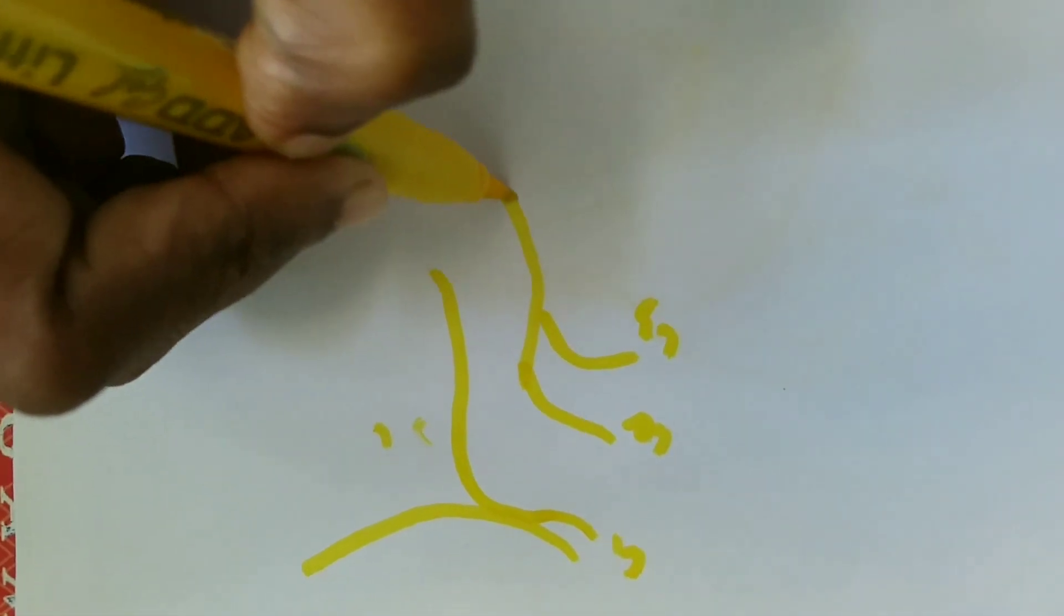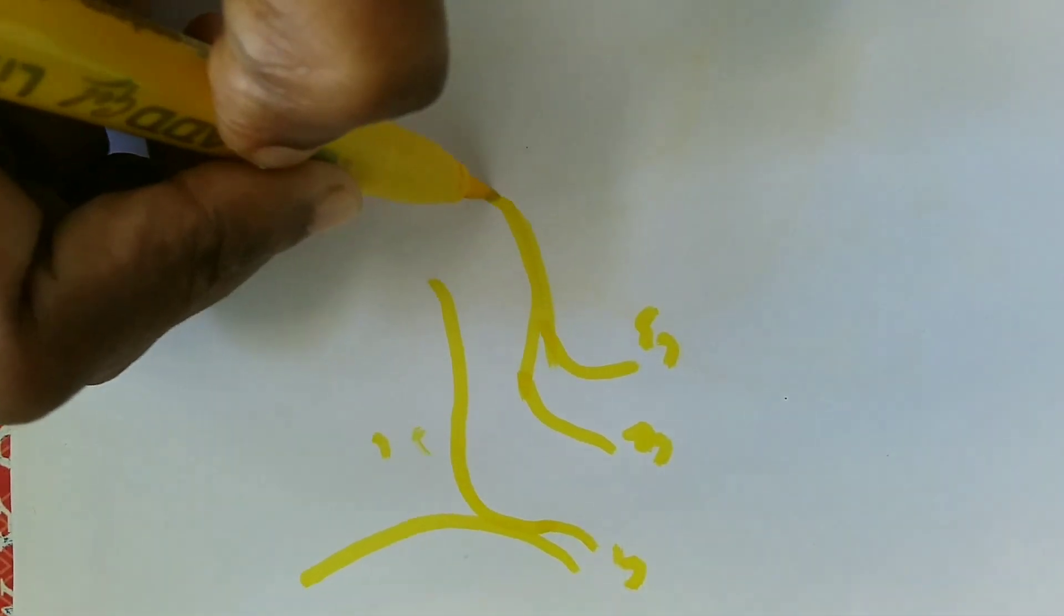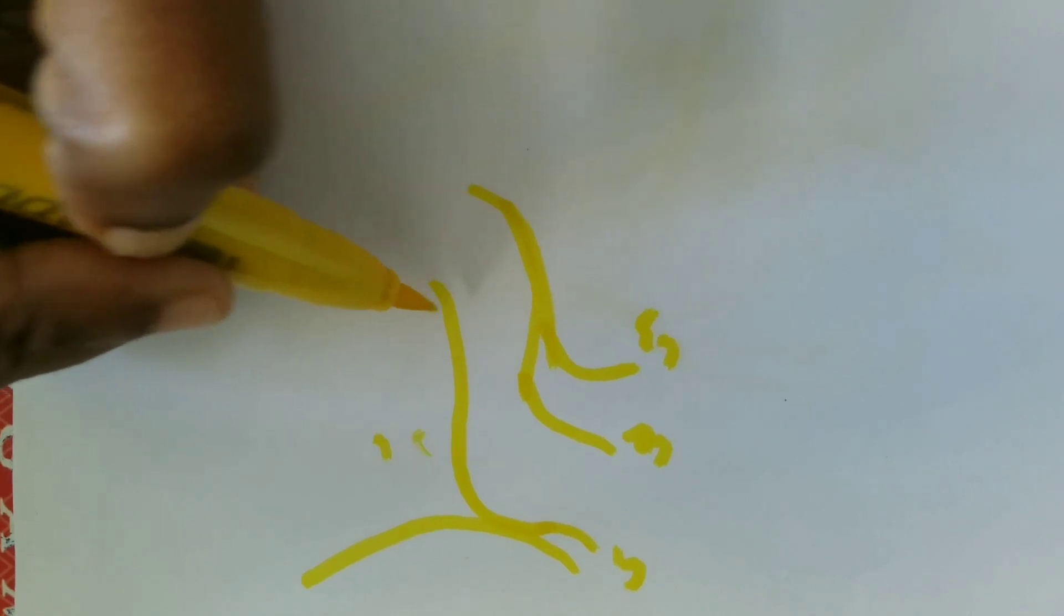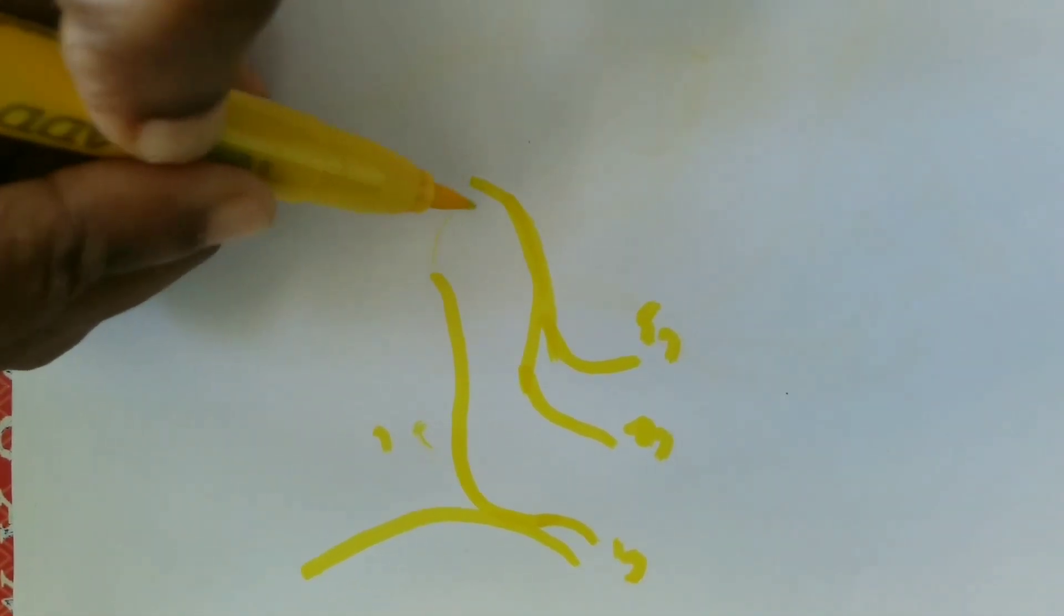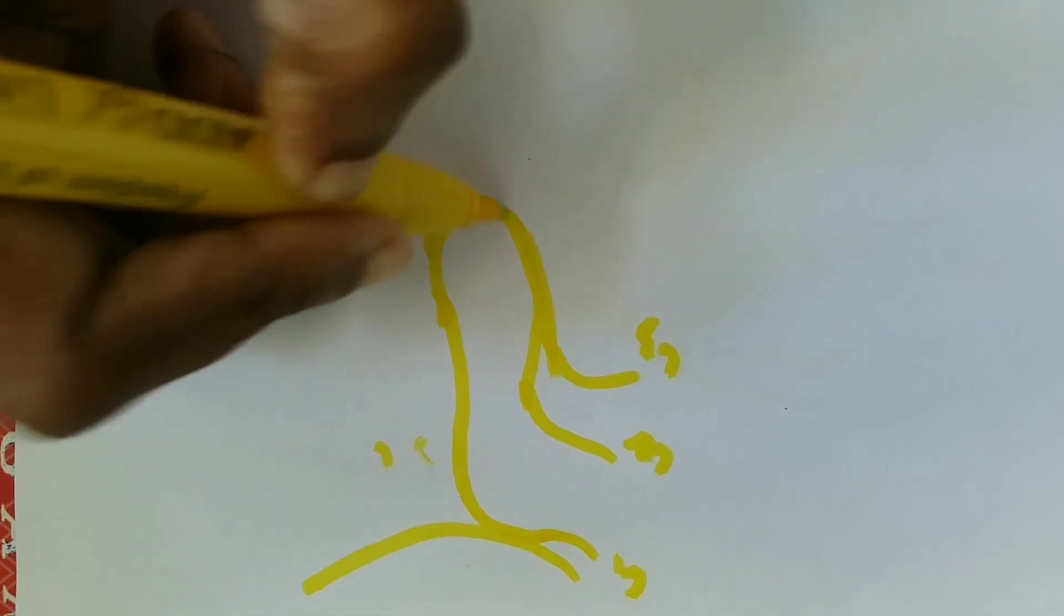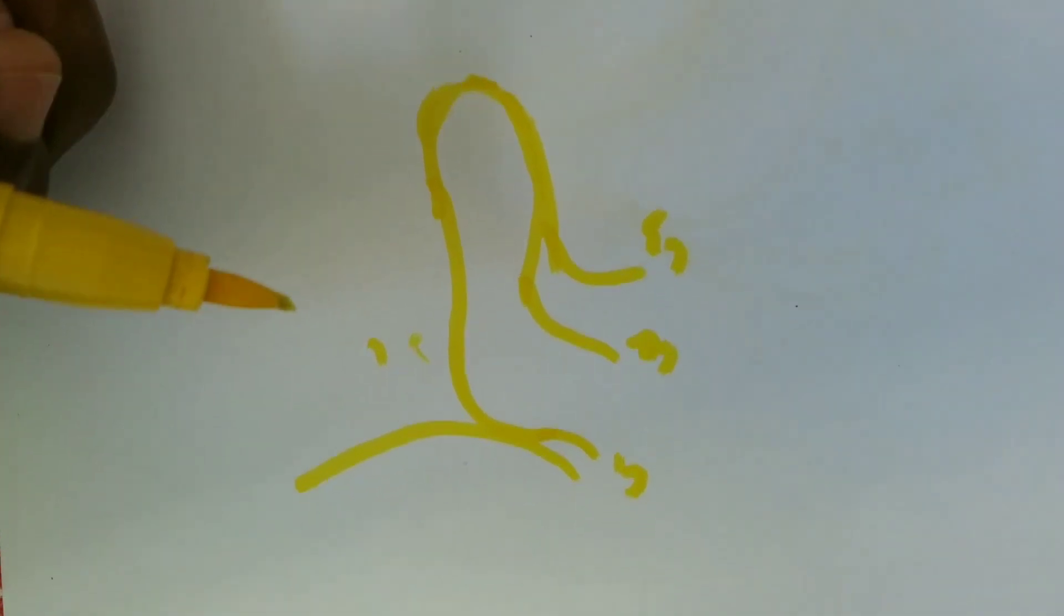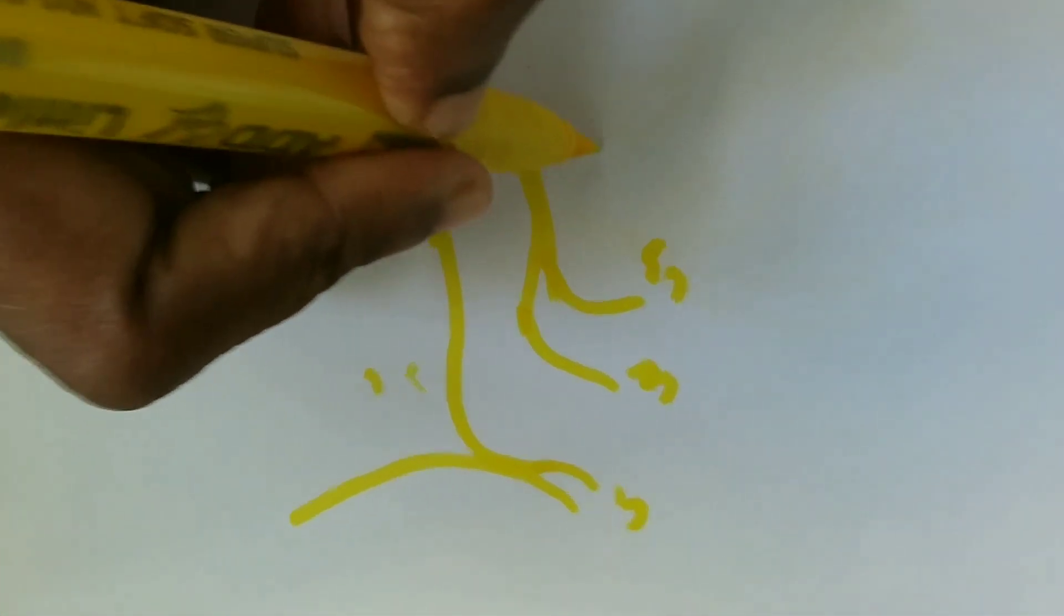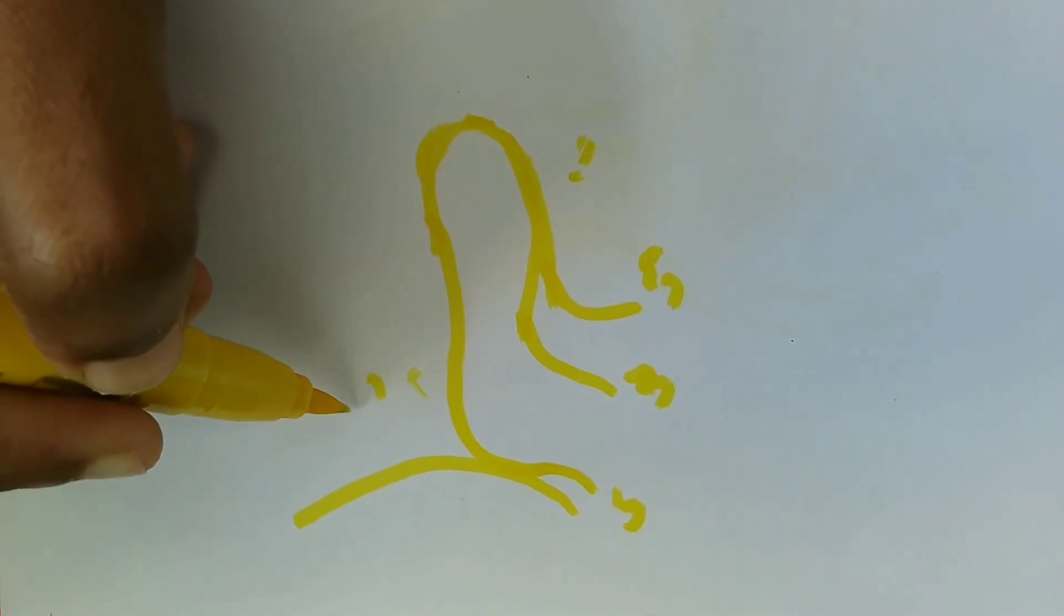In C2, C3, these two fibers join together and form the inferior root. So the superior root and the inferior root join together and form the loop of ansa cervicalis. This is how the ansa cervicalis is formed. This is inferior root and this is your superior root.